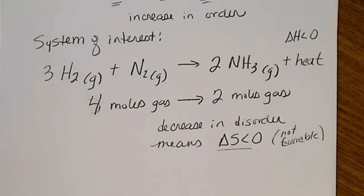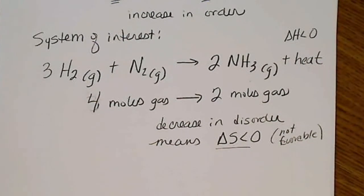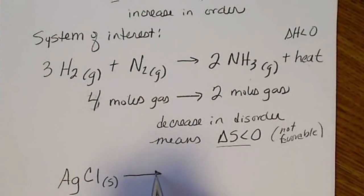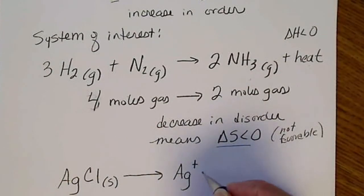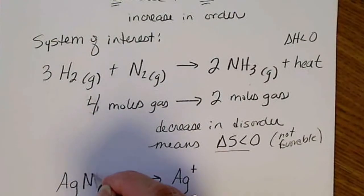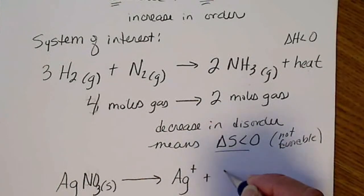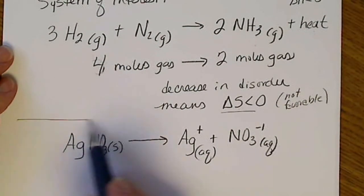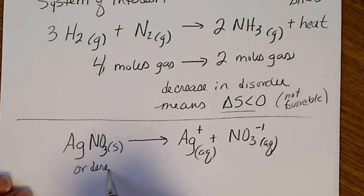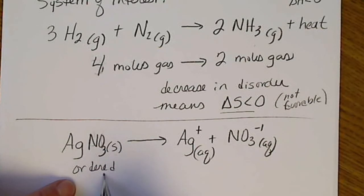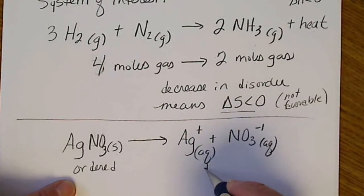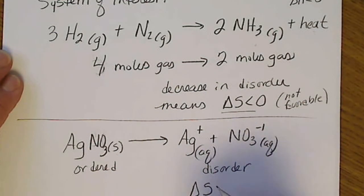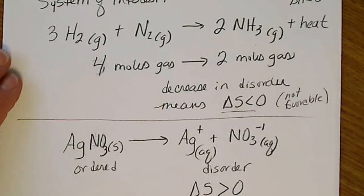To practice, consider what happens when solid sodium nitrate dissolves in water. The solid has more order because of its lattice structure. After dissolving, we have ions in solution, which is disorder. We go from order to disorder, so entropy is increasing and the delta S term is positive — this is the more favorable direction.